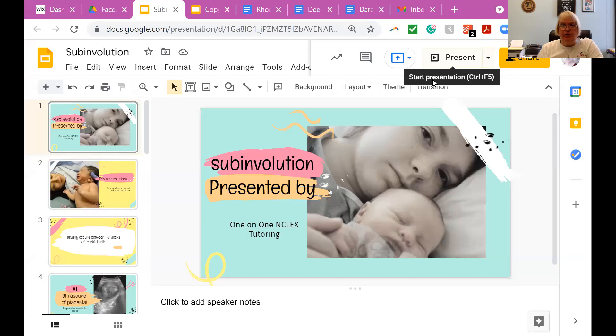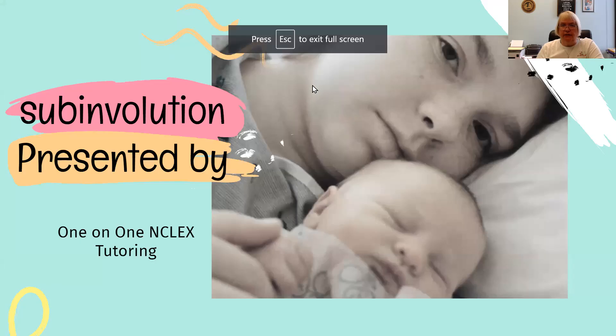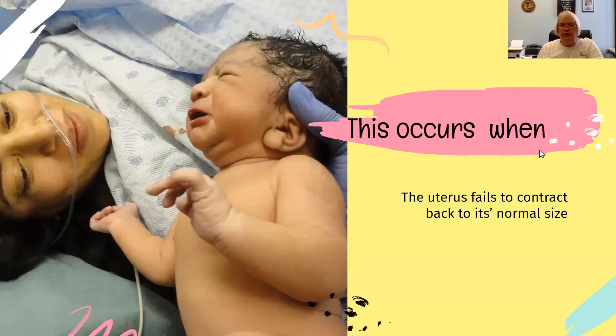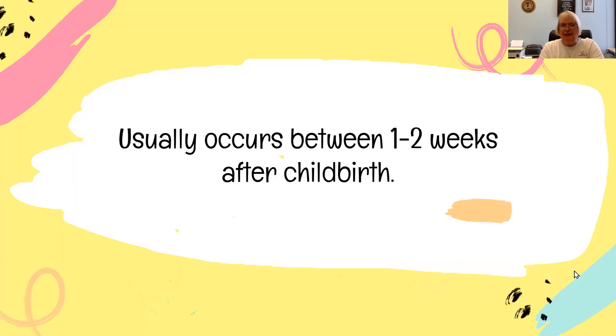Hey, everybody. Today we're going to talk about subinvolution. Subinvolution occurs when the uterus fails to contract back to its normal size. It usually occurs between one to two weeks after childbirth.